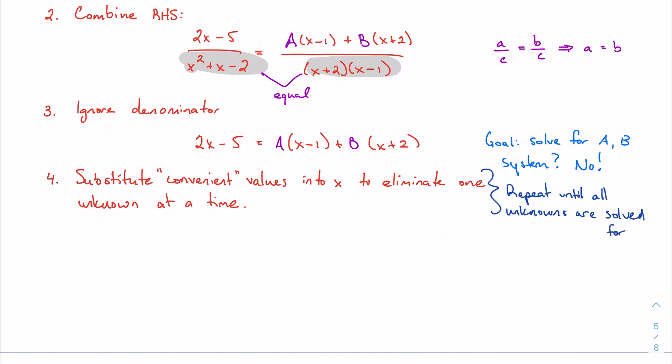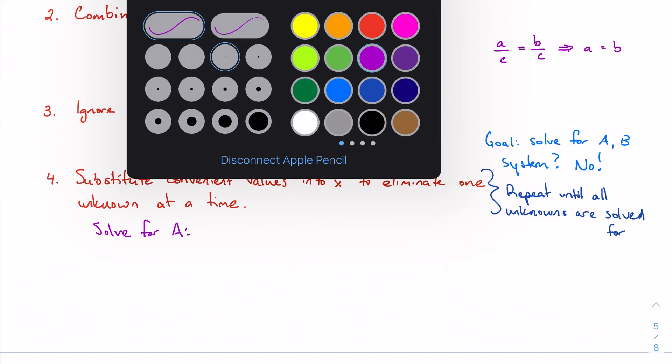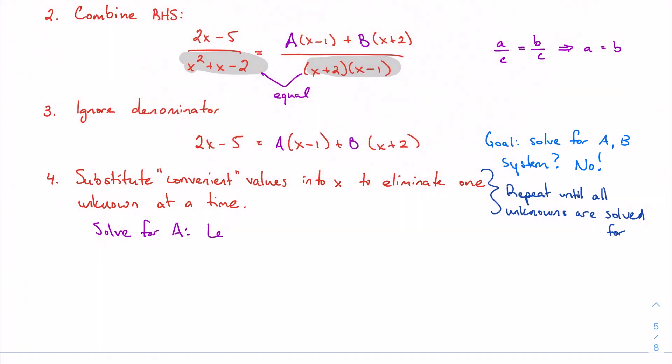So, if I want to solve for A, then I need to eliminate B. The way I'm going to eliminate B is to let x equal negative 2. That's going to give me 0 times B, which effectively eliminates the B. So, if I let x equal negative 2, then I'm going to get negative 9 on my left, negative 3A on my right. And that tells me that A equals 3.